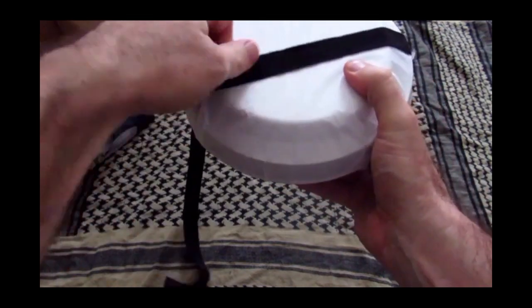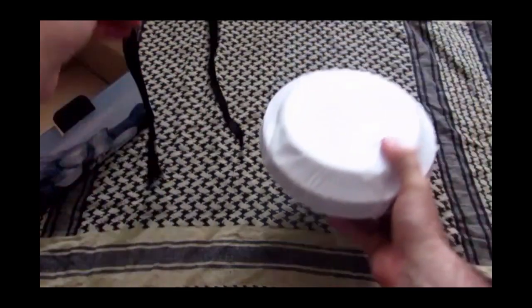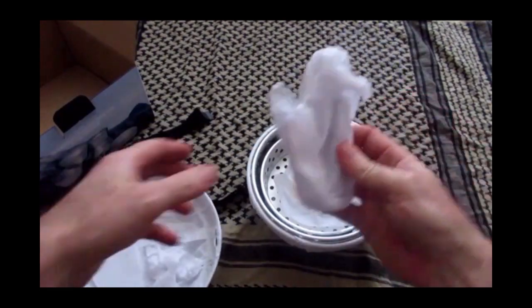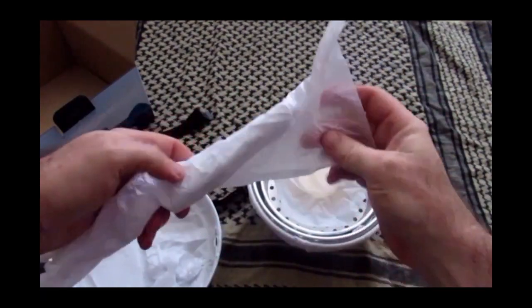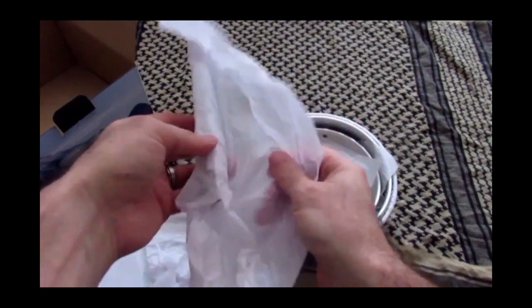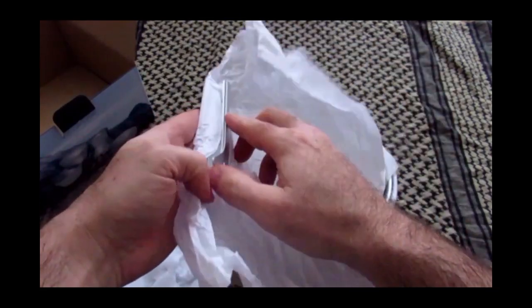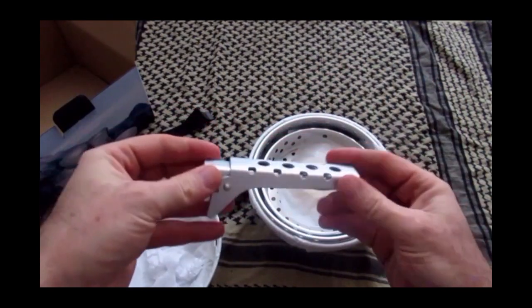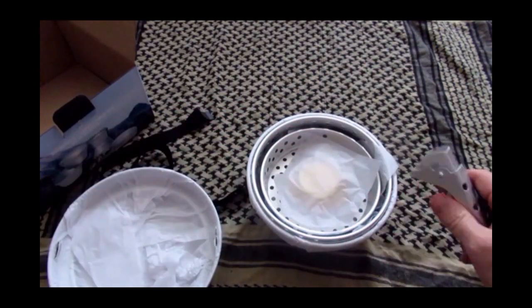So just take this nylon strap out of the way that holds it all together. Obviously this is the first time I've opened it, so there's lots of packing paper. Here's the pot grips or pan grips, whatever you want to call them. It's all made out of aluminum, but it's nice that they've punched a few holes out of it to try and reduce the weight as much as possible.